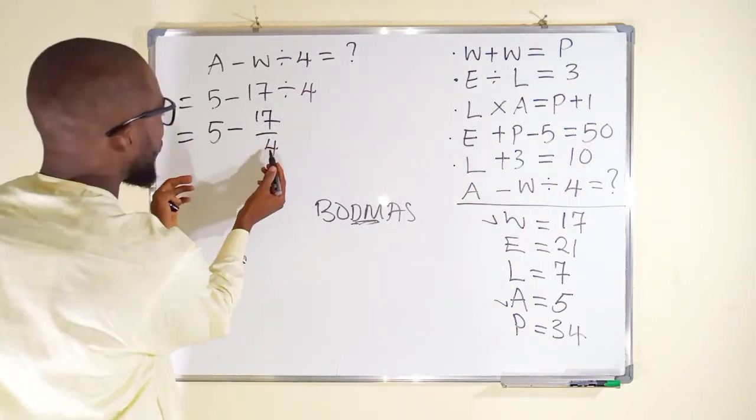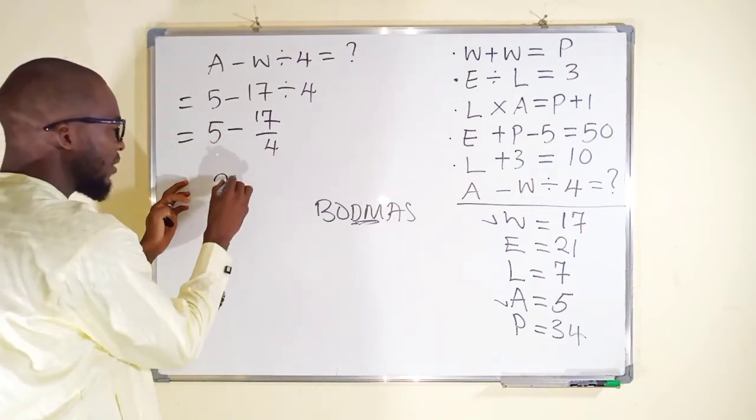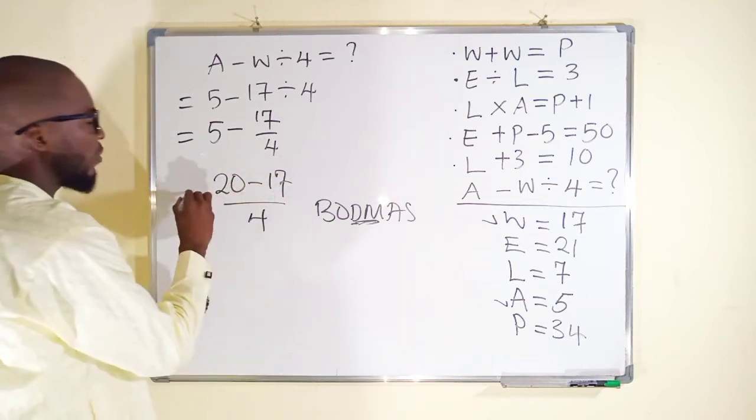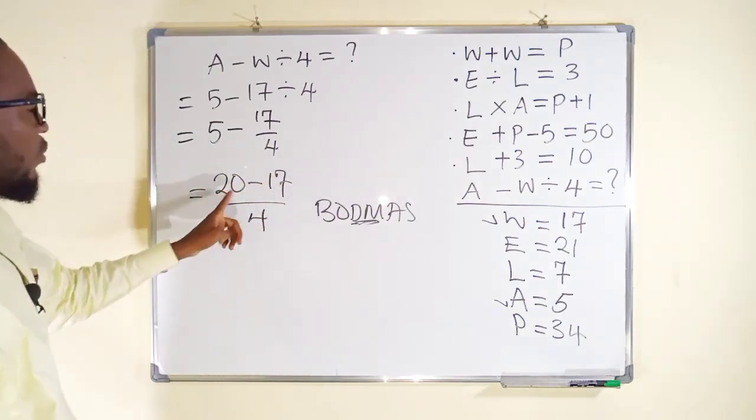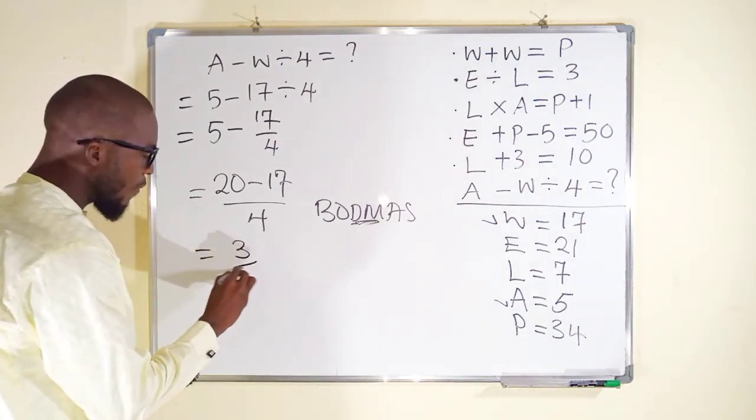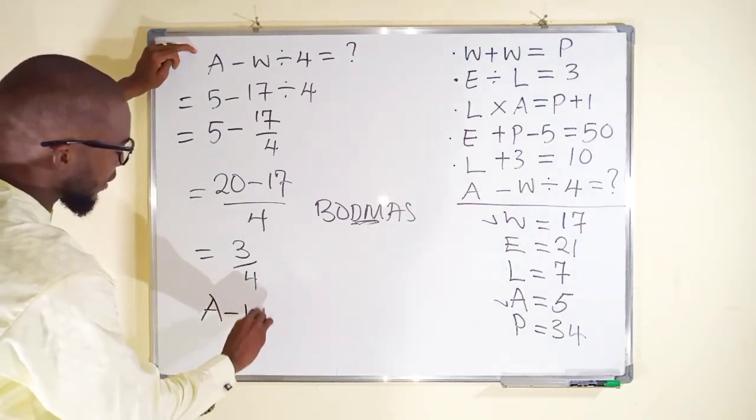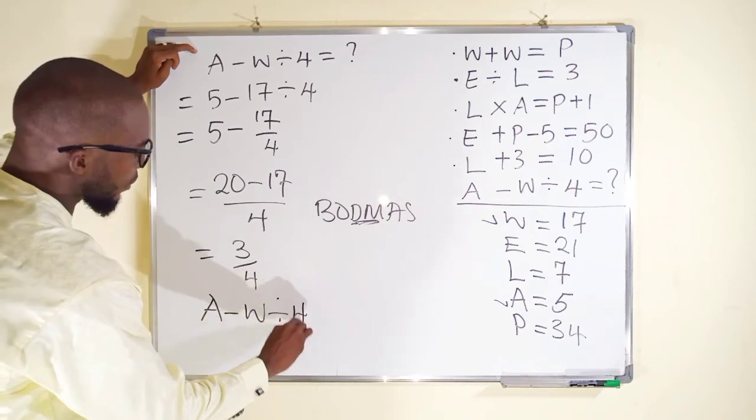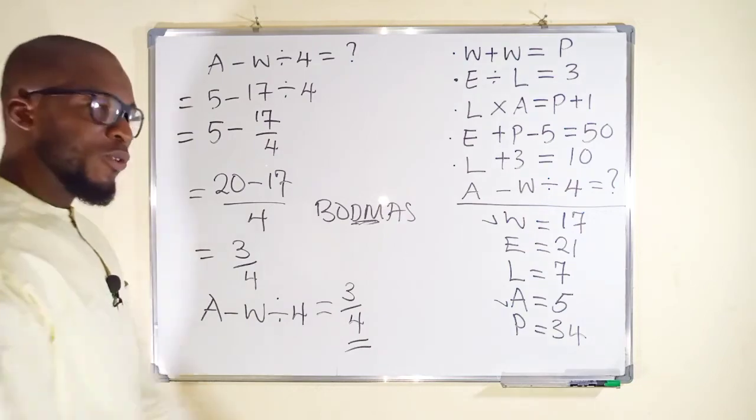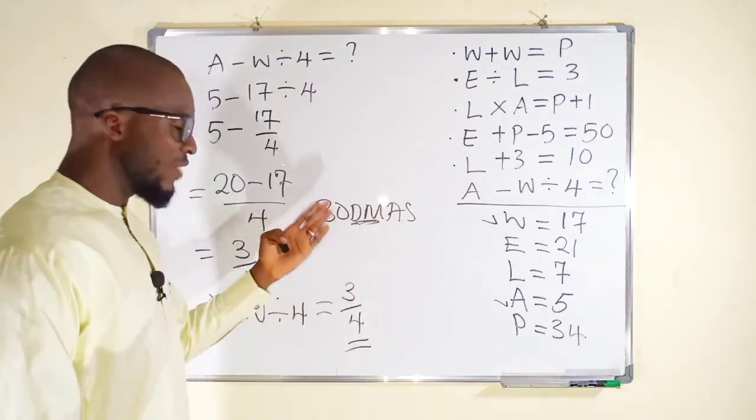But this becomes 5 minus 17 divided by 4. To simplify this, you can just multiply this by this. 4 times 5 is 20. Then minus 17 divided by 4. This is how to simplify this. 20 minus 17 is 3 over 4. You can see finally A minus W divided by 4 is nothing but 3 divided by 4. So the solution to the last equation that we are looking for is just 3 divided by 4. And this is all I have for you today.